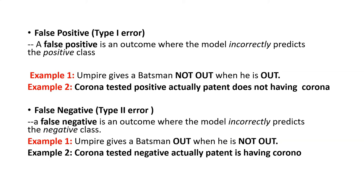The fourth one is called false negative — also known as type 2 error. A false negative is an outcome where the model incorrectly predicts the negative class. For example, an umpire gives a batsman out when he is not out. Similarly, a corona test comes back negative but the patient is actually having corona. So these are the four classification evaluation metrics basically used for classification model predictions.